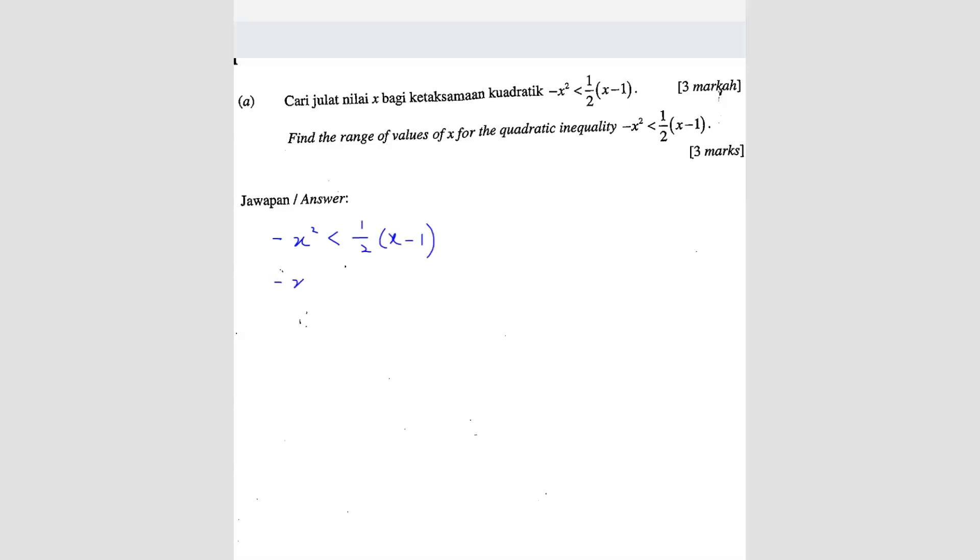So we're going to expand it first. So we get 1 over 2 x minus 1 over 2. Bring all to one side. I get negative x square minus 1 over 2 x plus 1 over 2 less than 0. So to eliminate this negative and also to make this all become whole number, what I'm going to do is I'm going to take the whole thing, multiply by negative 2.